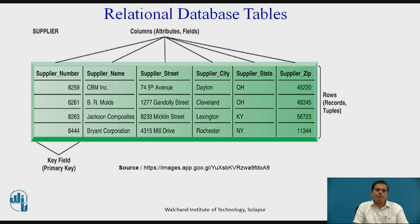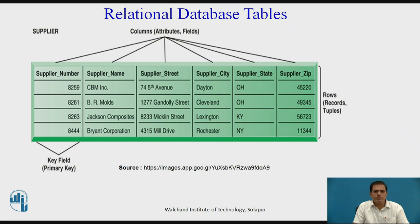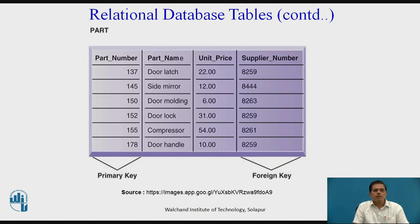Here is a supplier table in a relational database containing six fields: supplier number, supplier name, supplier state, supplier city, and supplier ship. Rows are records (tuples) and columns are attributes (fields). The primary key is supplier number, which contains unique values. The second table is the part table, containing part number, part name, part unit price, and supplier number. Here, part number is the primary key with unique values, and supplier number is a foreign key — the same field found in the supplier table — used to look up values in the original table.